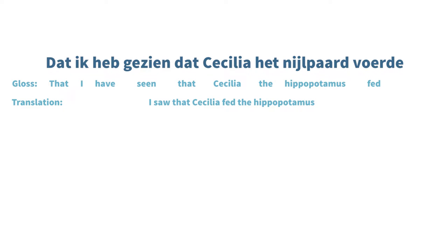Maybe it's easiest to illustrate that by means of an example, to illustrate the phenomenon of verb clustering in Dutch. For instance, we see two sentences here. The first one: 'dat ik heb gezien dat Cecilia het paard voerde.' In this case, all the verbs — heb gezien, and voerde at the back — they occur together with their non-verbal arguments.